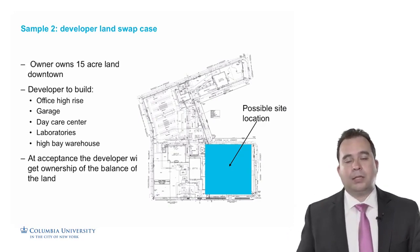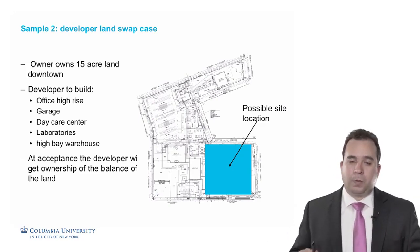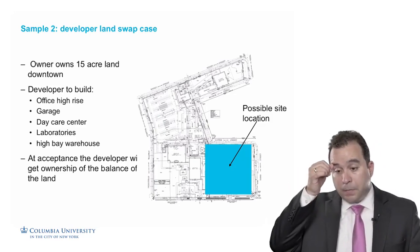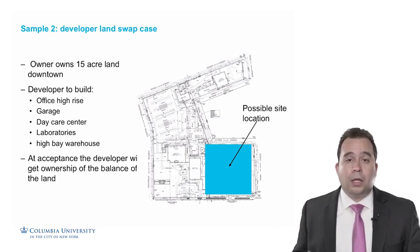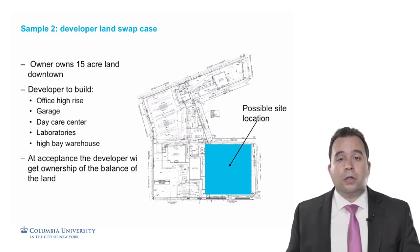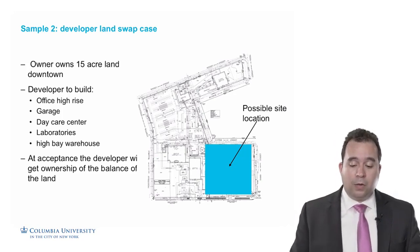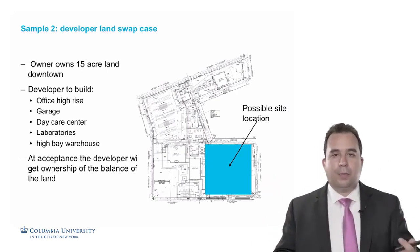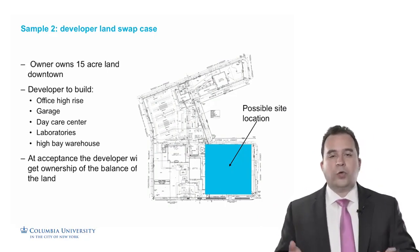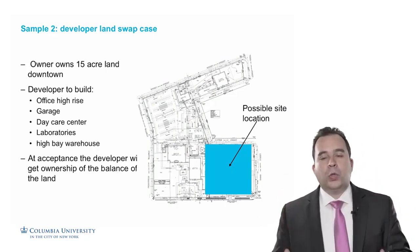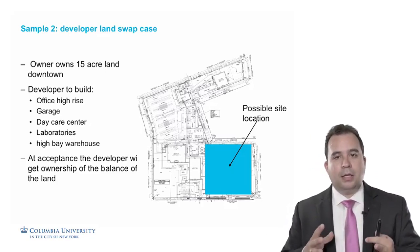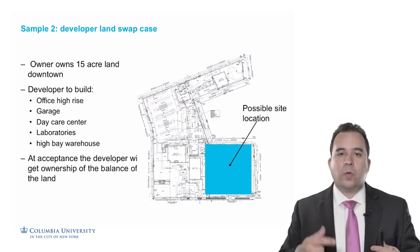That way the developer can take that land and do whatever they want. They could do mixed-use apartment or office buildings, or any revenue generation project that makes sense for that location. The owner could have sold the land and developed the project, but in this case they chose to utilize the market demand of that land and get a developer engaged to swap it.